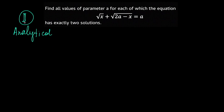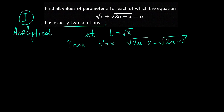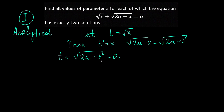The second solution is also analytical but smarter: we substitute one of the square roots. Let t = √x, so t² = x and √(2A − x) = √(2A − t²). Since the original equation should have exactly two solutions, our new equation t + √(2A − t²) = A should have exactly two non-negative solutions, i.e., t ≥ 0.